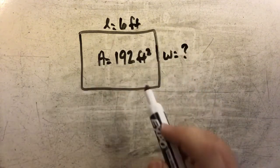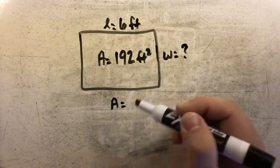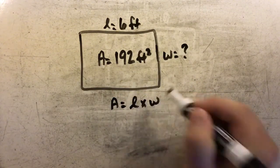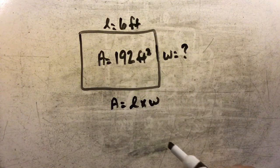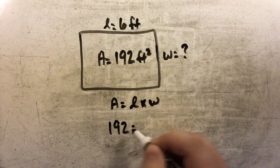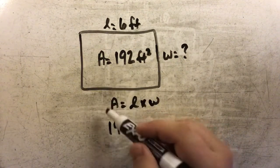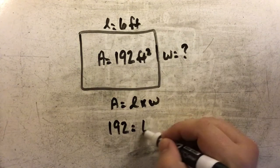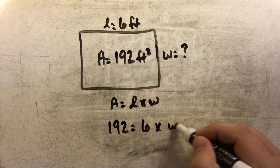I'll set up my problem using the formula area equals length times width. Then I'll plug in the information I have. 192 is my area, my length is 6, and I don't know my width.